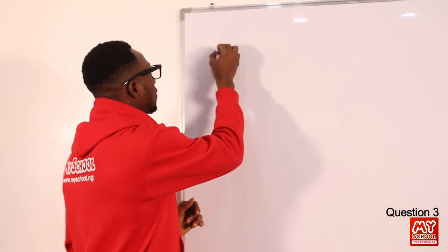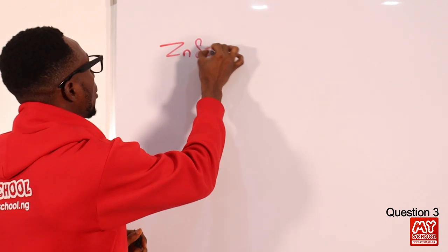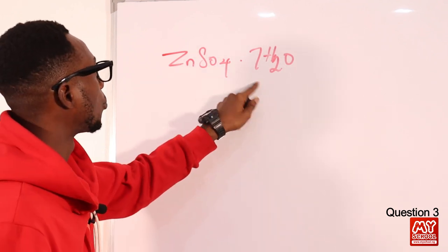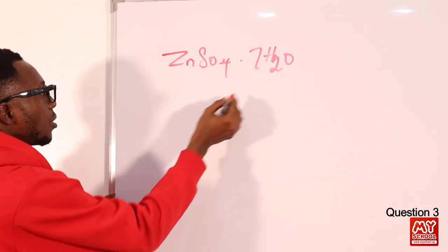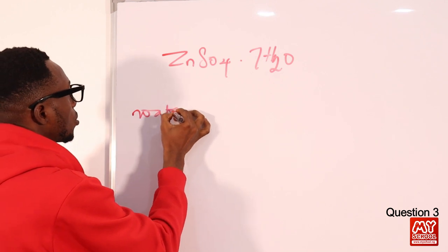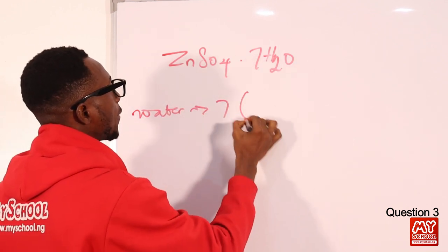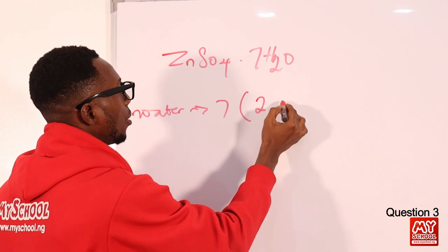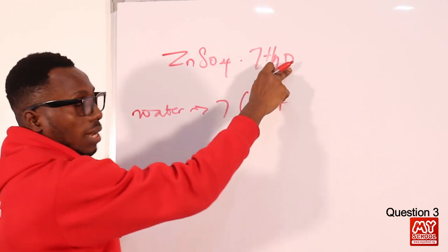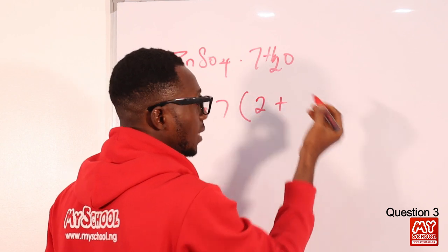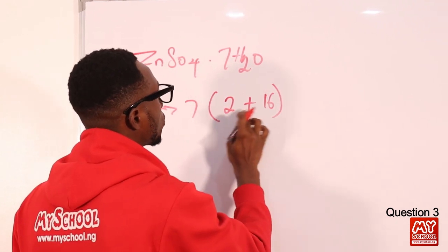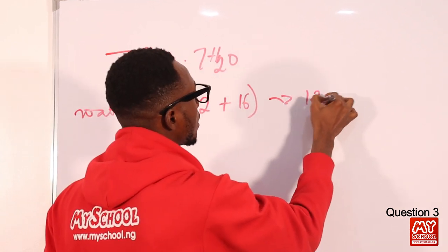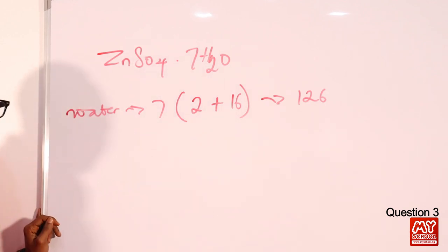The chemical formula is ZnSO₄·7H₂O. For the molar mass of water: hydrogen has atomic mass 1 times 2 atoms = 2, plus oxygen 16 times 1 = 16, giving 18 g/mol per water molecule. Multiplied by 7: 18 × 7 = 126 g/mol. That is the molar mass contribution of the 7H₂O.